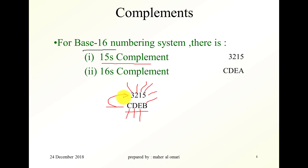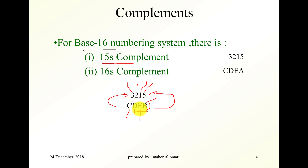And vice versa, this here is the 16's complement of this one. 16 minus B is 5. 15 minus E is 1. 15 minus D is 2. 15 minus C is 3.